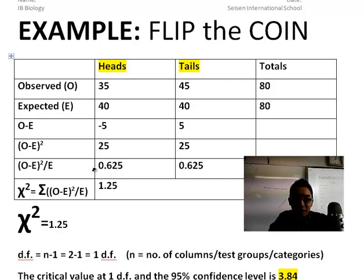So in this case, this is actually going to be 25, this column, divided by expected, do the same over here. And you add these two numbers together and you get your value. That's your test value. We call that your chi-squared value.